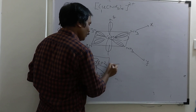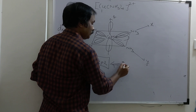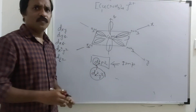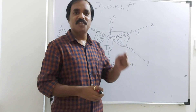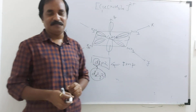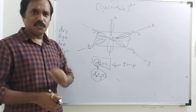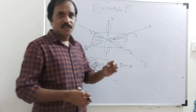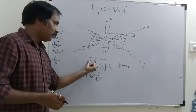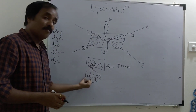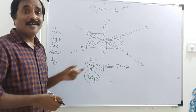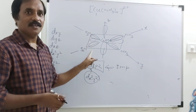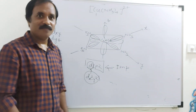This is a very important concept. The question may be asked: which d atomic orbital is the part of dsp²? In many competitive exams, this has been asked. Remember: dx²-y² because it directly points towards the four ligands. Thank you.